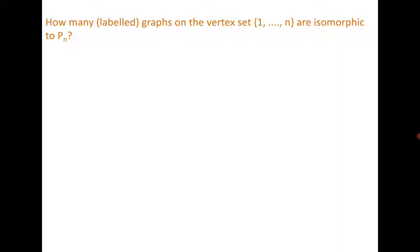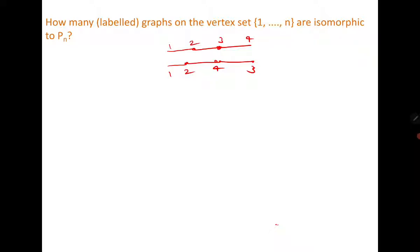How many labeled graphs on vertex set 1 to n are isomorphic to Pn? Recall that Pn is a path graph with n vertices. If unlabeled, there is only one path graph. But once labeled, there are many options. For example, the graph 1-2-3-4 and the graph 1-2-4-3 are non-isomorphic, because vertex 3 has degree 2 in the first but degree 1 in the second.